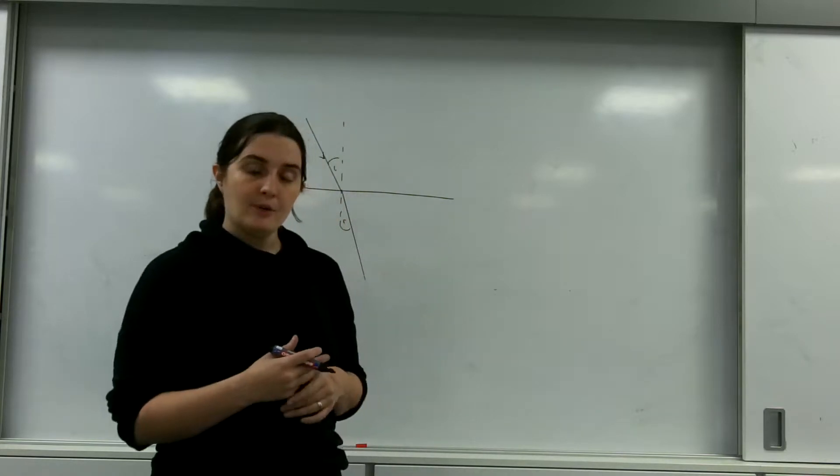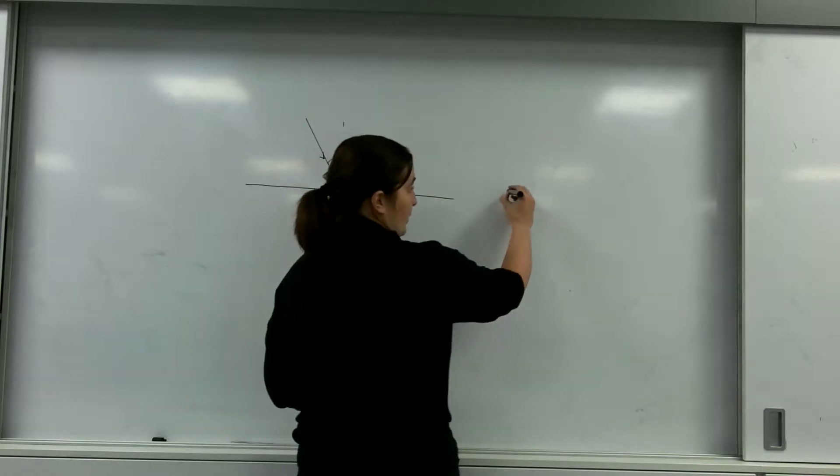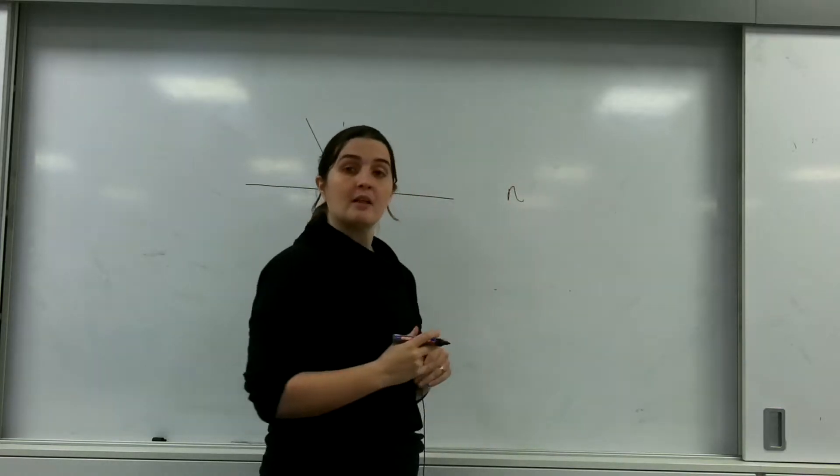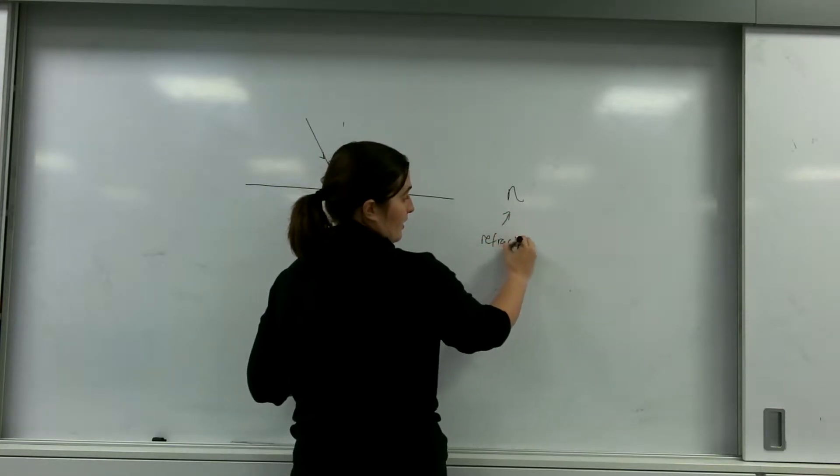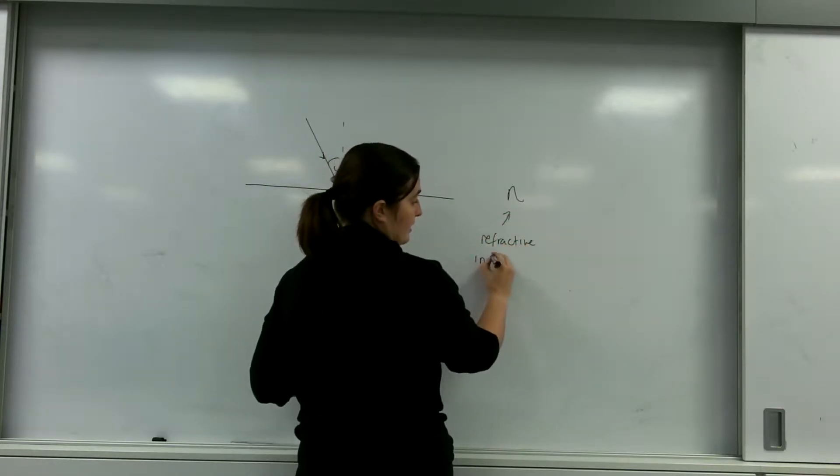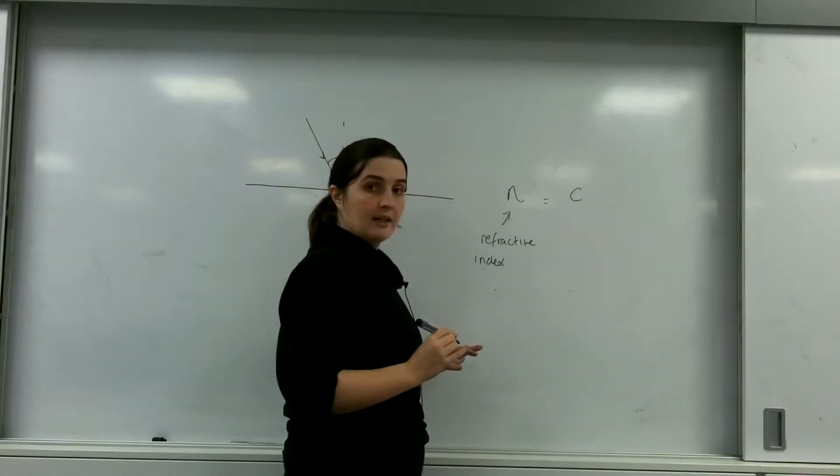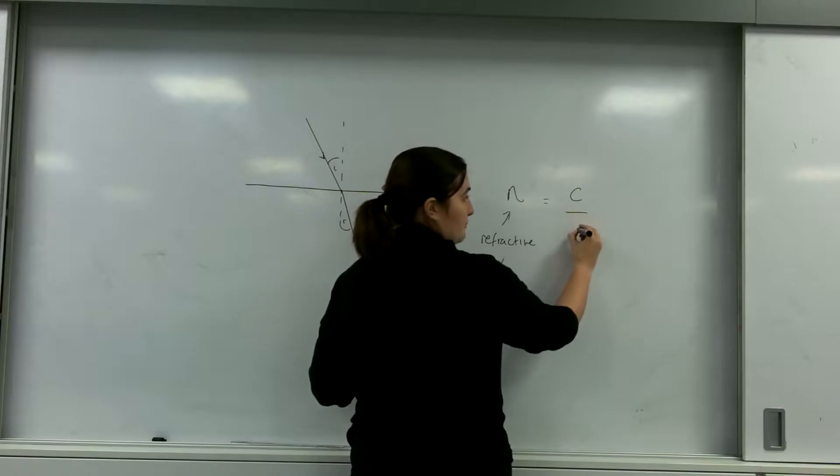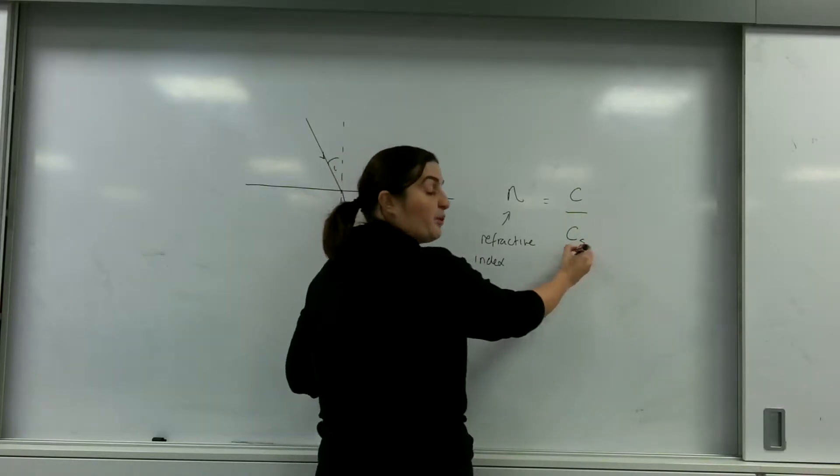And we can measure that, and we look at how the speed of light is affected, and we call that the refractive index. And we're going to use the letter N. N is the refractive index, and that is the speed of light divided by the speed of light in the substance. That's what that S is for.